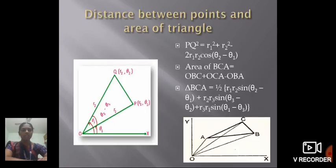Next, distance between points and area of triangle. We have two points P and Q with coordinates (R1, theta1) and (R2, theta2) respectively. The angle POQ will be theta2 minus theta1. The distance formula is PQ square equal to R1 square plus R2 square minus twice R1 R2 cos(theta2 minus theta1). The area of the triangle BCA equals half of [R1 R2 sin(theta2 minus theta1) plus R2 R3 sin(theta3 minus theta2) plus R3 R1 sin(theta1 minus theta3)].